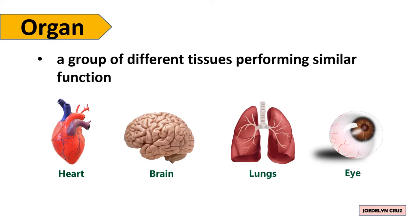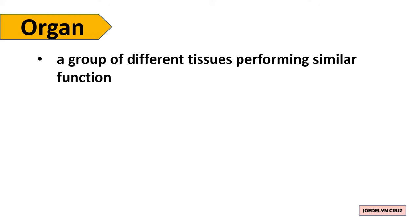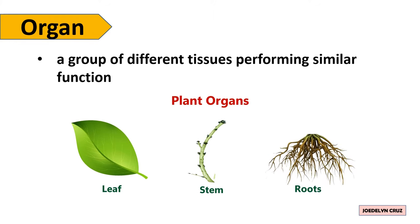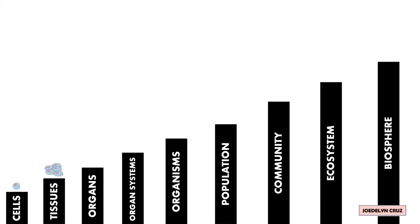and eye. On the other hand, the examples of plant organs are Leaf, stem, and roots. Again, the third smallest level of organization is Organ.